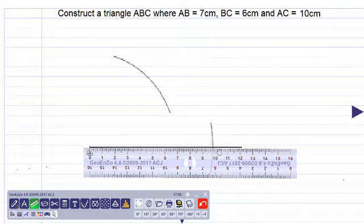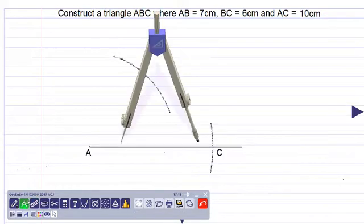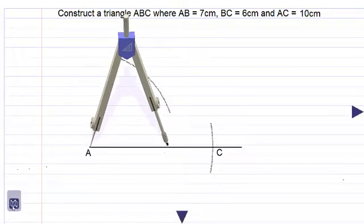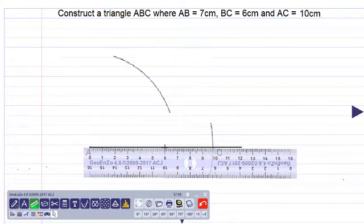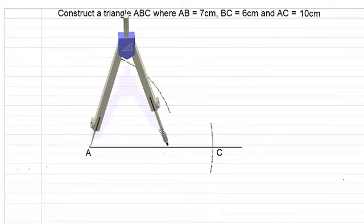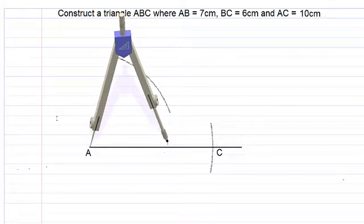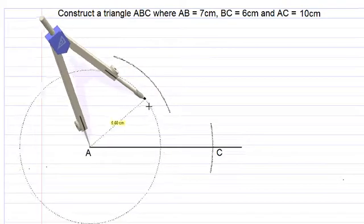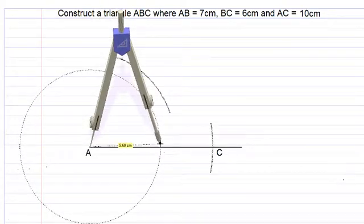We are placing the compass from zero to six centimeters on top of our ruler. So it would be about here. Let's do that again. We adjust the arms of our compass to six centimeters.